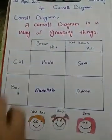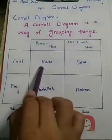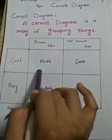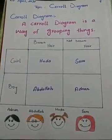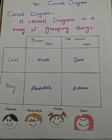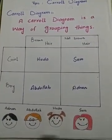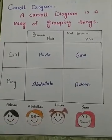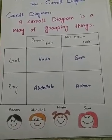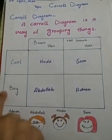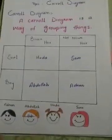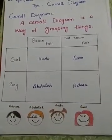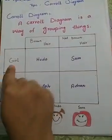We have a diagram like this — this is called a Carroll diagram. We can sort data in these blocks and make an individual group of the same type of data. Here we have some data: two girls and two boys. We have to make girls and boys groups — who have brown hair and who don't have brown hair.